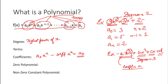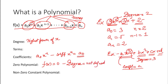Now let us understand what is a zero polynomial. A zero polynomial is a polynomial that is just the value 0. So if f(x) equals 0, such a polynomial is known as a zero polynomial. If we put it in this equation, all the terms a₀ to aₙ and x should be equal to 0. Then we get a zero polynomial. Another important thing is the degree of this polynomial is not defined — the degree of a zero polynomial is not defined.